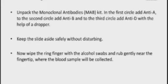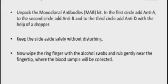In the procedure, take a clean glass slide and draw three circles on it with a marker. Unpack the monoclonal antibodies — the MAP kit. In the first circle add anti-A antibody, in the second add anti-B, and in the third add anti-D solution using the dropper provided in the kit. Keep the slide aside safely without disturbing it so that the drops do not mix with each other.